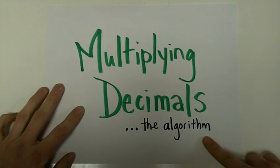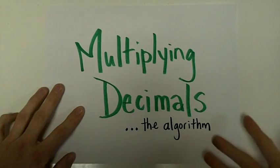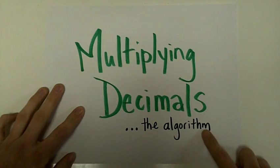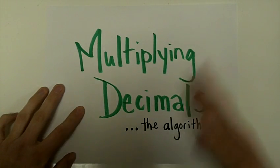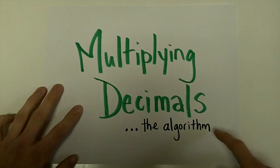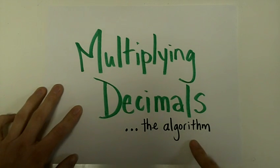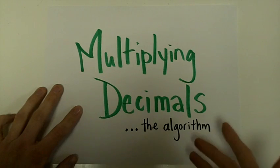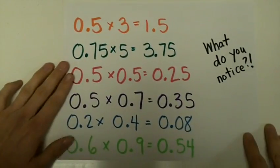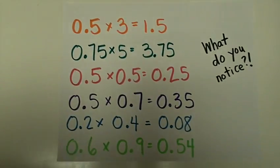Multiplying decimals — the algorithm. In the last video, we used models in order to multiply decimals, and we used base 10 blocks and hundreds grids in order to figure it out. In this video, I'm going to teach you the algorithm that helps you know specifically where to put the decimal when you multiply decimals. Let's look at the problems that you found in the last video, in the models video.